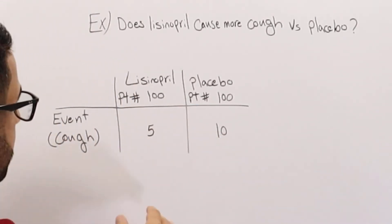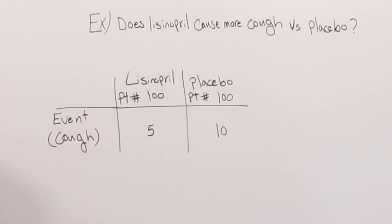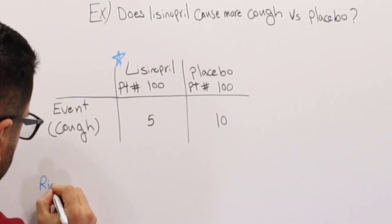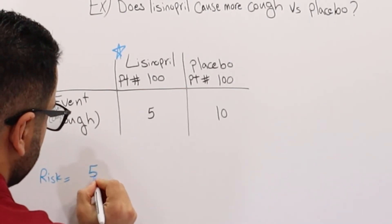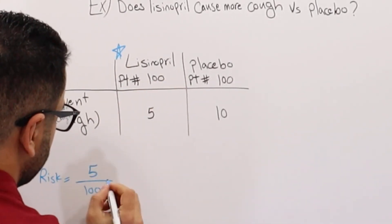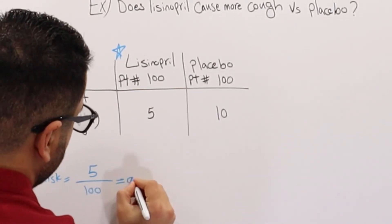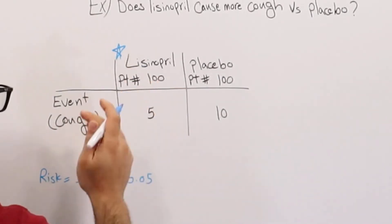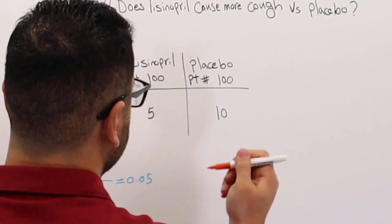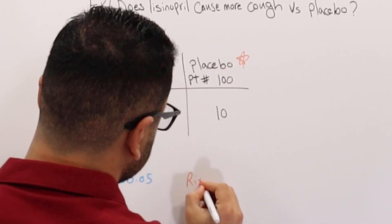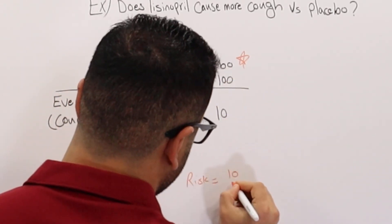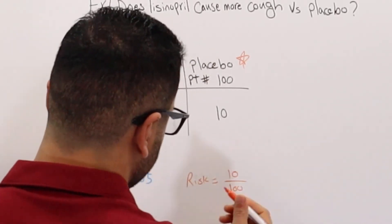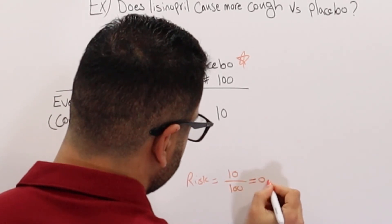So now let's calculate. In order to calculate the relative risk, we need to calculate risk first. Risk in the treatment group: the number of people that had the event is 5, over the total of 100. So the answer is 0.05 — that is the risk in the treatment group. Now for the risk in the placebo: we have 100 total and 10 had cough, so 10 over 100 gives us 0.1.